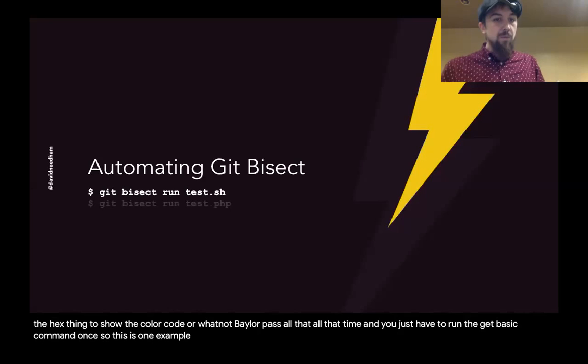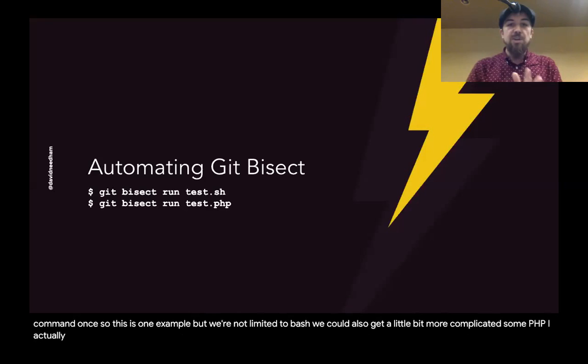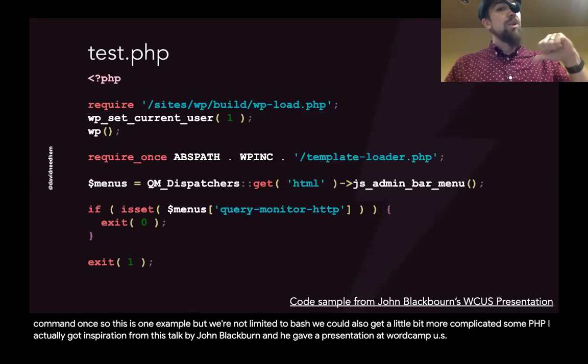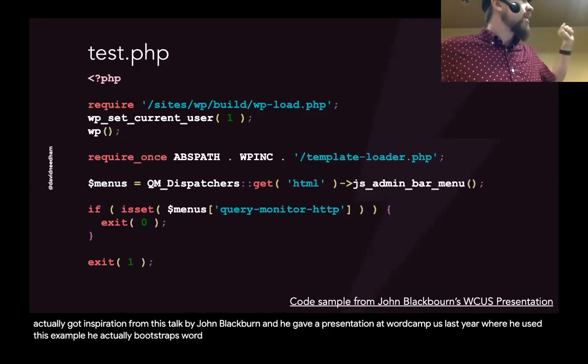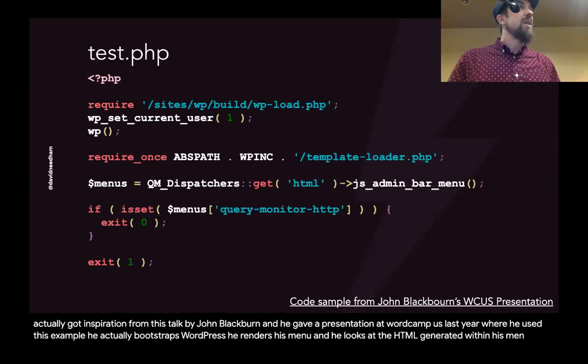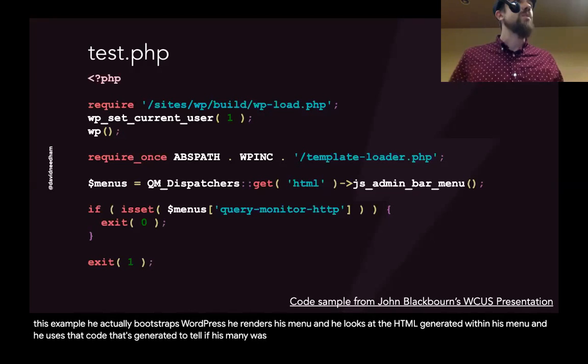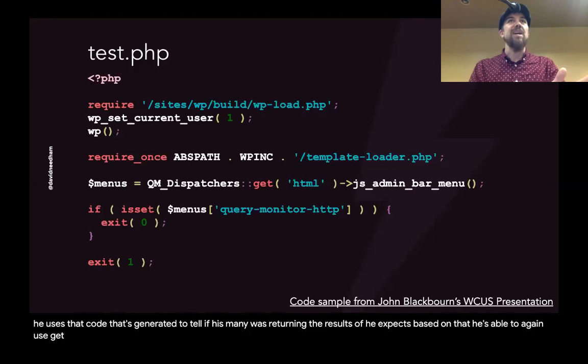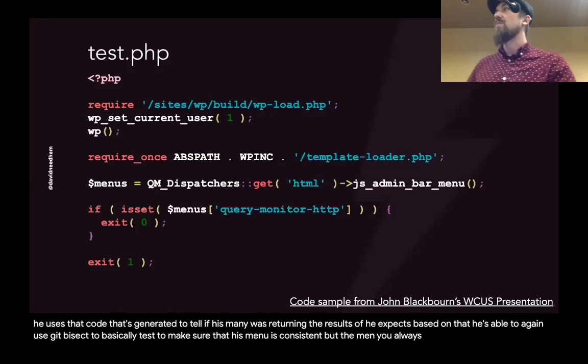We're not limited to bash — we could also get more complicated with some PHP. I got inspiration from a talk by John Blackburn, who gave a presentation at WordCamp US last year. He actually bootstraps WordPress, renders his menu, and looks at the HTML generated within his menu. He uses that generated code to tell if his menu is returning the results he expects, using git bisect to test that his menu is consistent and always has everything you'd expect it to have.